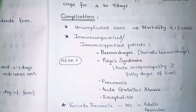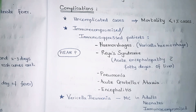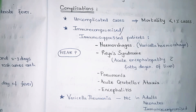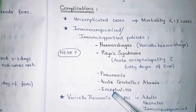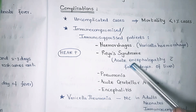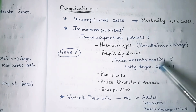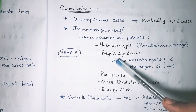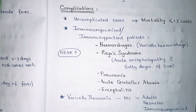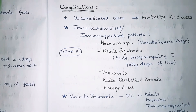Complications of chickenpox: in uncomplicated cases the mortality rate is less than 1%. In immunocompromised patients there are many complications, remembered with the mnemonic PHEAR-P: H for hemorrhages (varicella hemorrhagic), E for encephalitis, A for acute cerebellar ataxia, R for Reye's syndrome (acute encephalopathy with fatty degeneration of the liver), and P for pneumonia — mainly in immunocompromised and immunosuppressed patients.